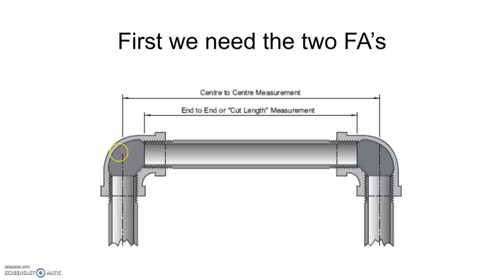These FA's, as we remember from previous videos, are from the center of the fitting to where the end of the pipe stops in the fitting on either side.